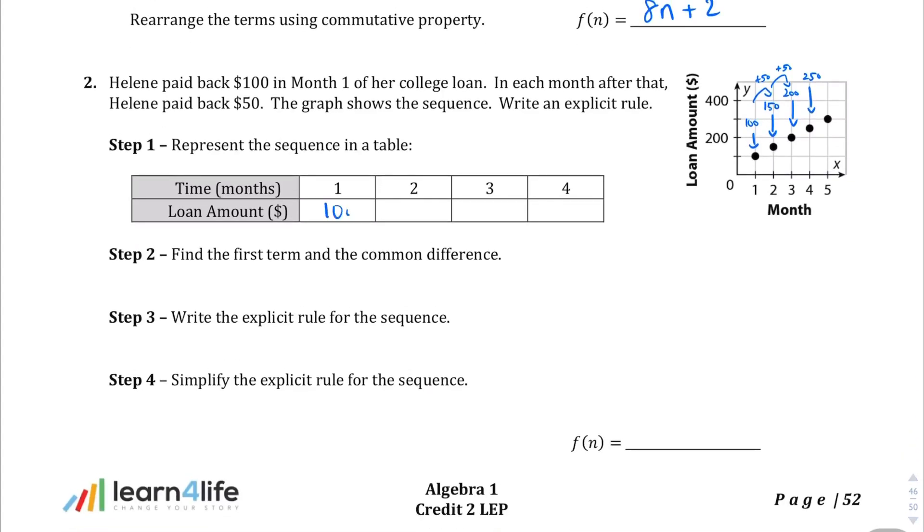Let's plug that in. Month 1, she's paid $100. Month 2, she pays 50 more, so now she's paid 150. Month 3, now she's paid 200. Month 4, now she's paid 250. The first term is 100, so f(1) is going to equal 100. And then the common difference is going to equal 50. Let's write that explicit rule. f(n) is equal to the first term plus the common difference times n minus 1. If we fill in what we just found, f(n) is equal to 100 plus 50 times n minus 1.